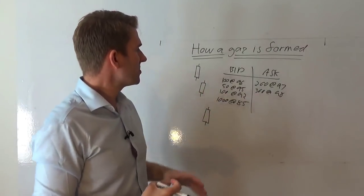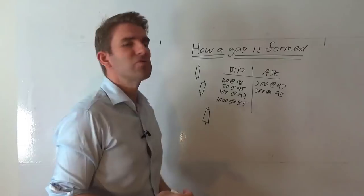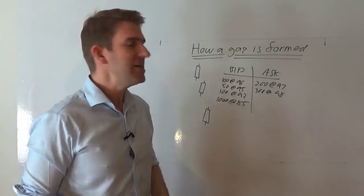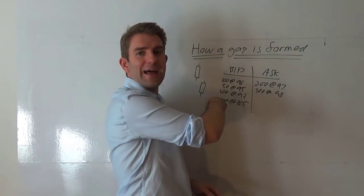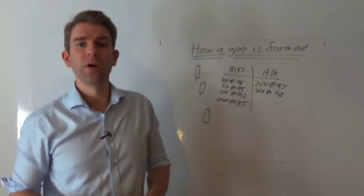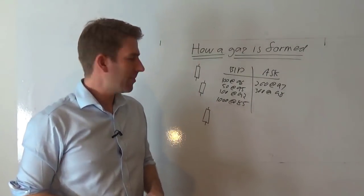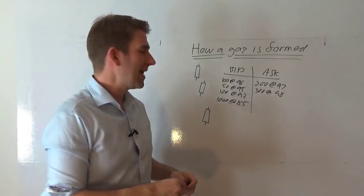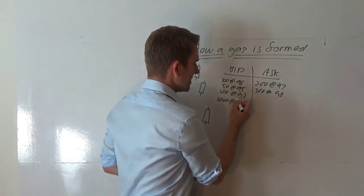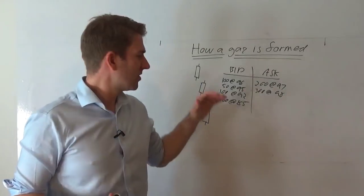So what happens now is if someone comes along and wants to sell 1000 at market, he's going to take 100 from here, 50 from there, 100 from there, and take some of that and leave whatever the rest is on that bid. Now that is why we get a gap. Because if the price is quickly moving, and there's no price levels in between, we will get a gap in price that moves.